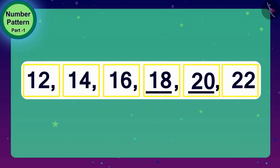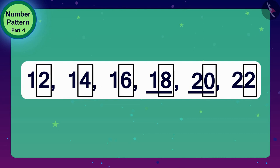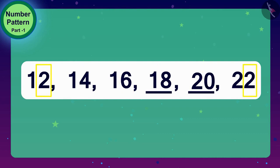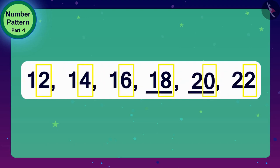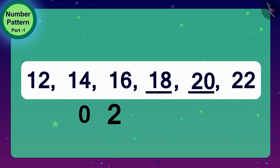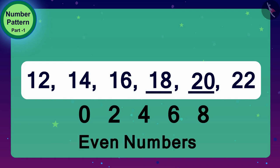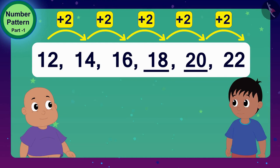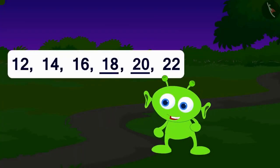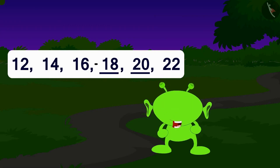Children, do you see one more special thing in these numbers? All the numbers have 0, 2, 4, 6, or 8 at the unit position. Do you know that such numbers — which have 0, 2, 4, 6, or 8 at the unit's place — are called even numbers? Raju and Bablu completed this number pattern using addition. Well done — you two have solved it perfectly.